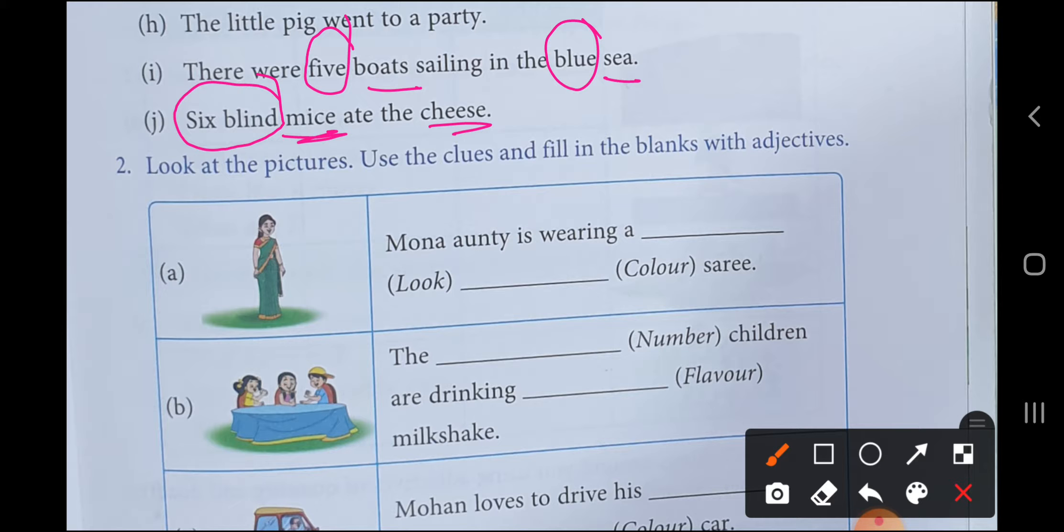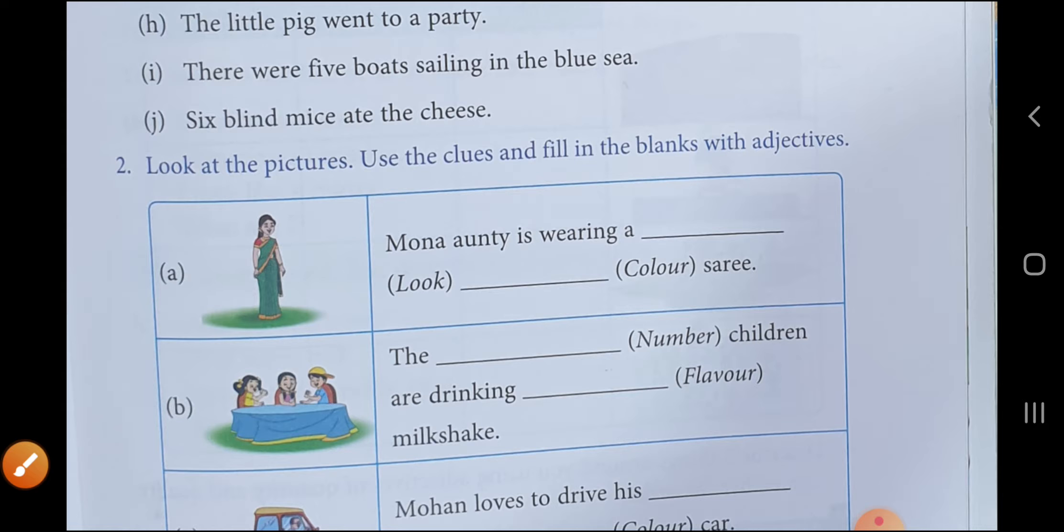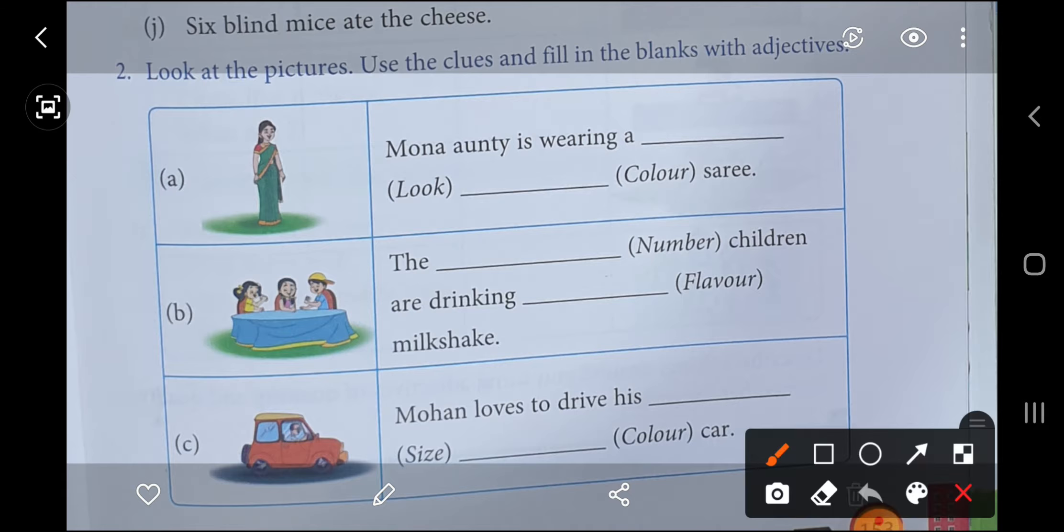Now question number two we are going to do. What you have to do? Look at the pictures, use the clues and fill in the blanks with adjectives. You have to look at the picture and with the help of clues, you have to fill in the blanks. See, Mona auntie is wearing a dash look. You have to see what type of sari it is. You can write anything - you can check the fabric, is it cotton, is it silk? Now it's your choice, whatever you think. I think this auntie is wearing a cotton sari, so I will write cotton. If you write silk, that's also correct. Dash color - you have bracket with color. See what color is the sari? This is green color, I will write green. So these are our adjectives. Mona auntie is wearing a cotton green sari, right?